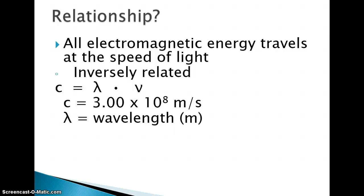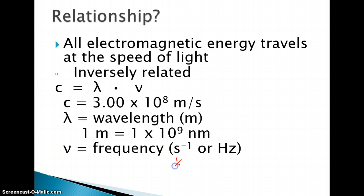Wavelengths are measured in meters. And 1 meter is equal to 1 times 10 to the 9th nanometers. That's going to be a conversion that you're going to need to know specifically for this unit, because we're going to need to convert between meters and nanometers in order to do our problems. And frequency is measured in seconds to the minus 1, which is the same as 1 over seconds, or hertz. And those are interchangeable.